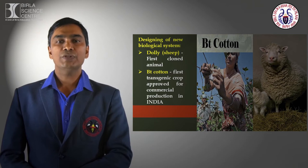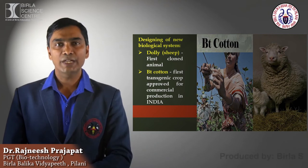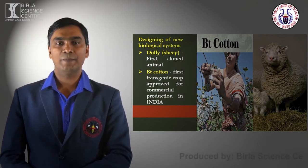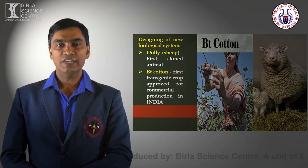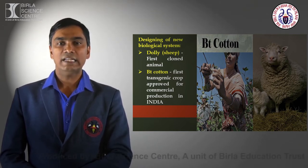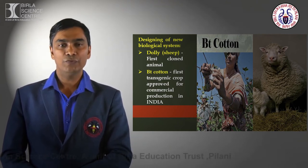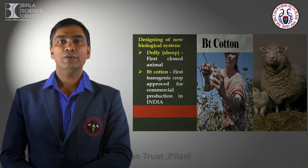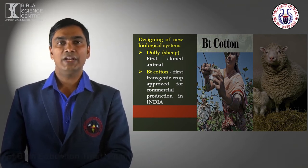In BT cotton, the gene BT-CRY1AC was inserted through the agrobacterium-mediated gene transfer method. The benefit of this genetically engineered crop is that it provides resistance against insect attack. If insects eat this plant, they will die within a few days, helping to control the insect population in the surrounding crop field.